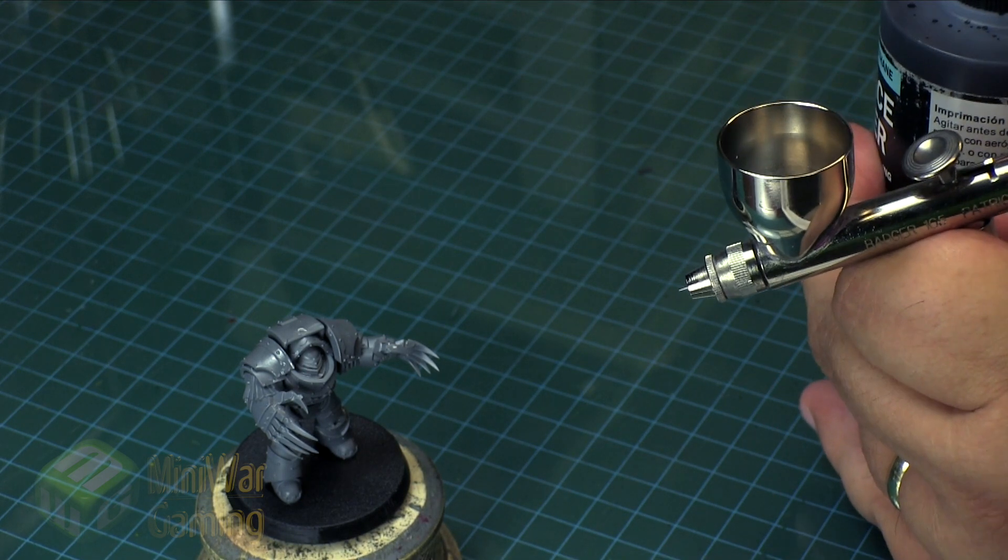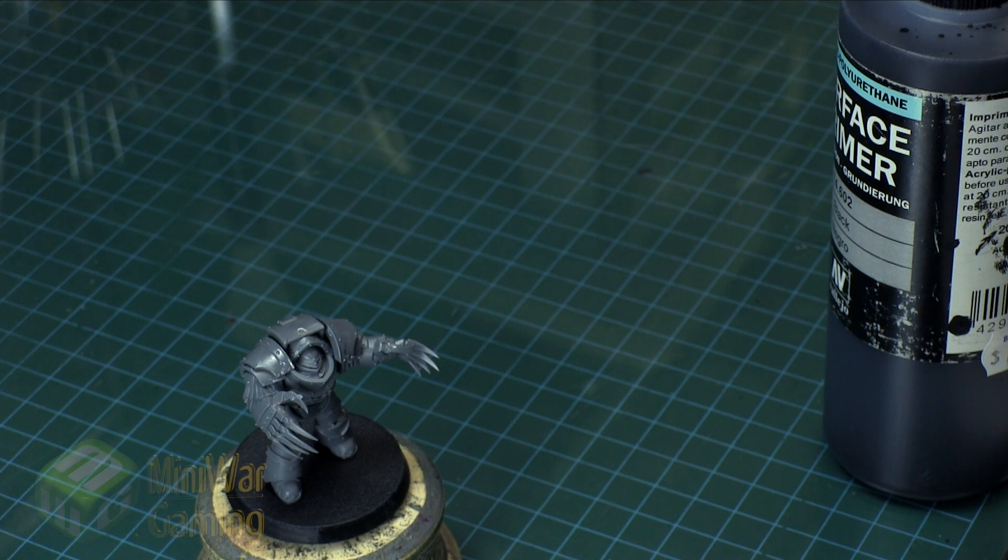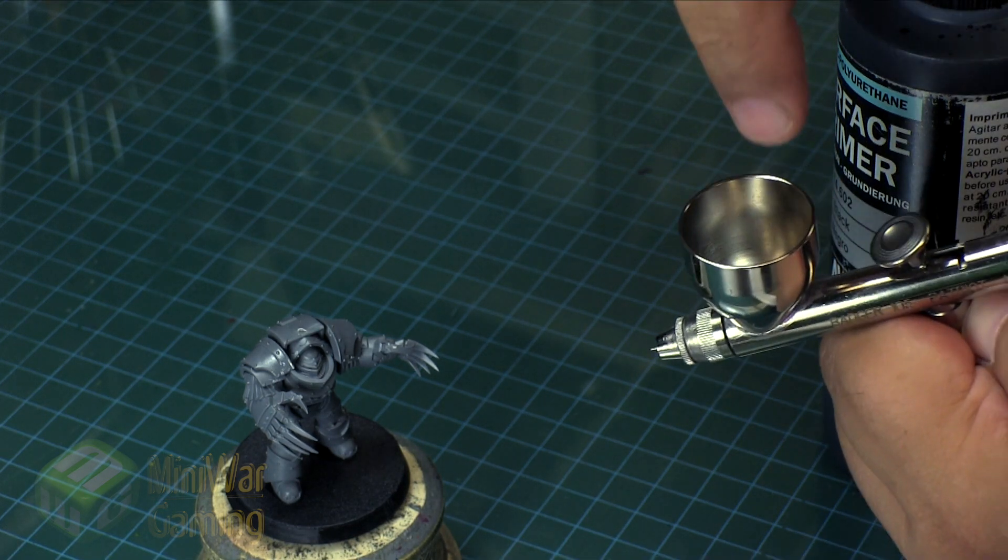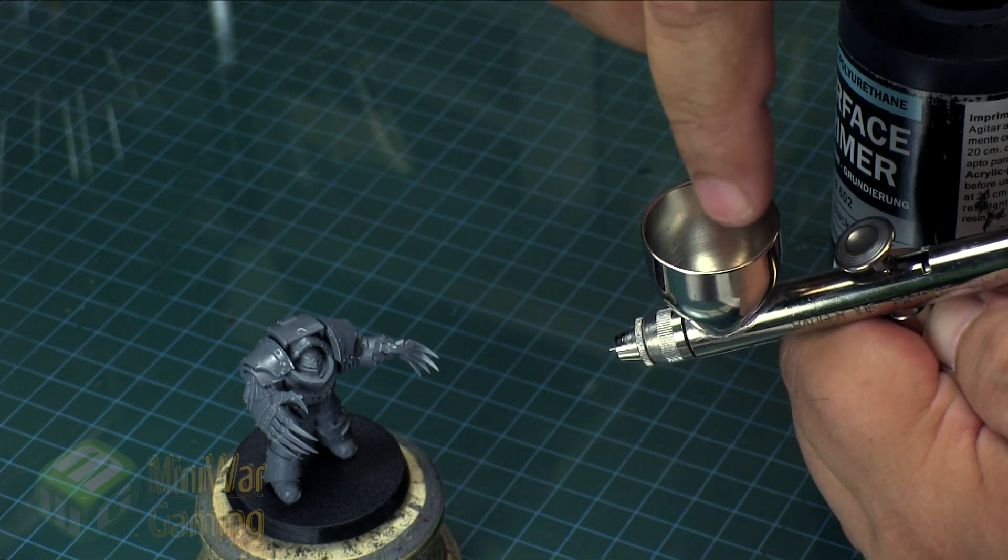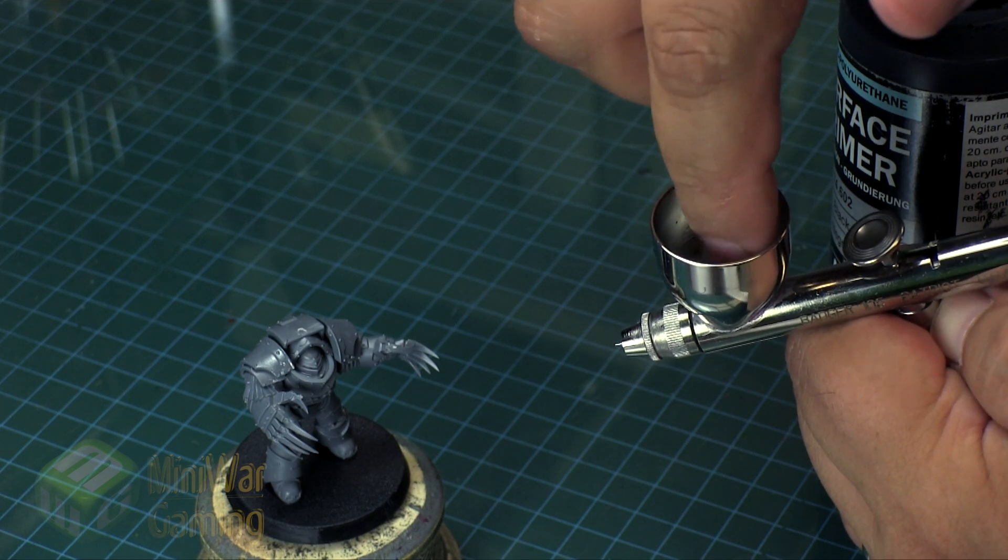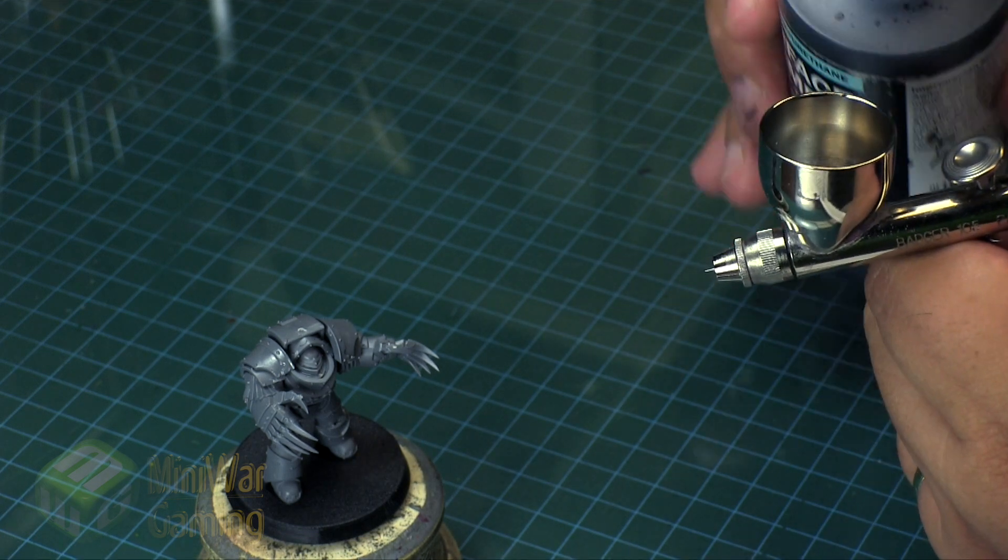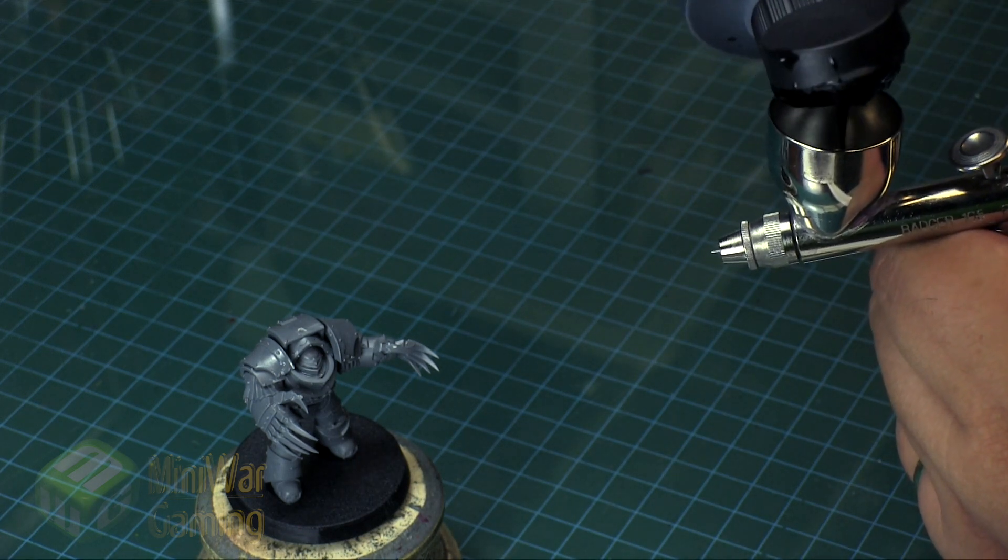If there's too much sitting in the well then you run the risk of paint drying along the edge. When the paint dries along the edge, sometimes it can fall off and fall into it and then you end up with a clog. That's why I tend to not use too much.